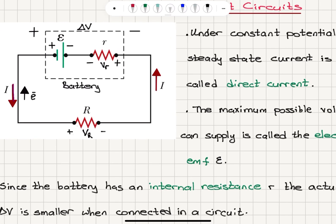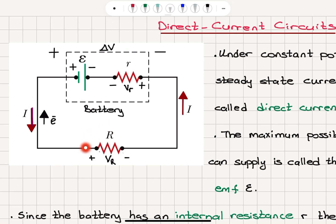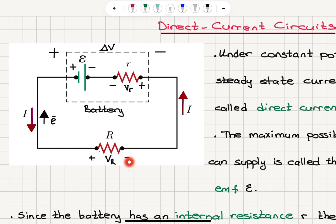Direct current circuits. We have a circuit in which a resistor is connected to a battery. Inside the battery, we have a potential difference epsilon and an internal resistance R. This constitutes the total potential difference delta V of the battery. Current flows in this direction, and electrons flow toward the positive terminal of the battery, resulting in a voltage drop on the resistor in the amount of V sub R.